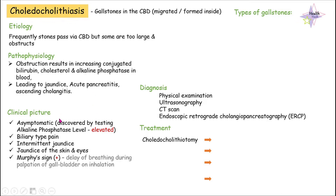Let's move on to the clinical picture. Usually these patients are asymptomatic and are discovered by accident when we see an elevation of alkaline phosphatase levels in the blood. If patients do have symptoms, they usually present with biliary-type pain, intermittent jaundice of the skin or eyes, and a positive Murphy's sign — which means there is a delay in breathing during palpation of the gallbladder on inhalation.